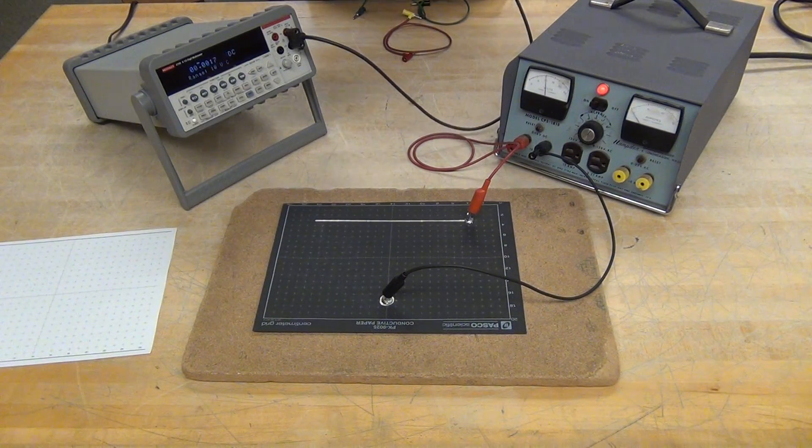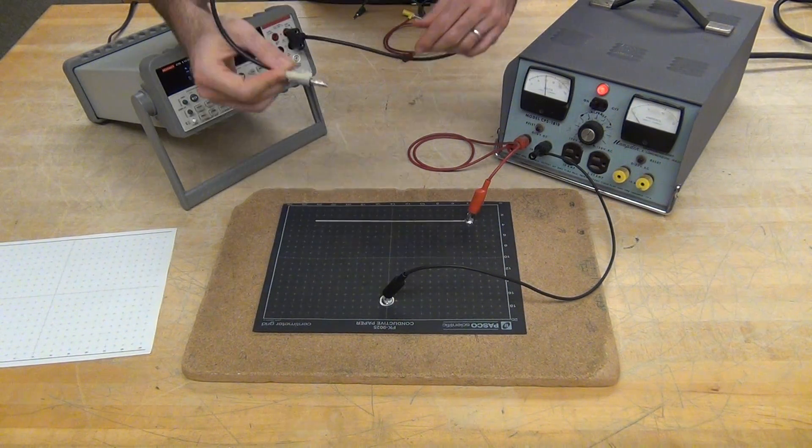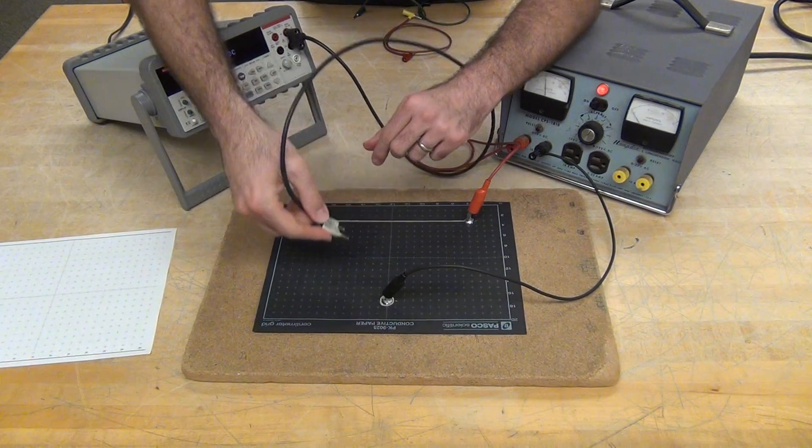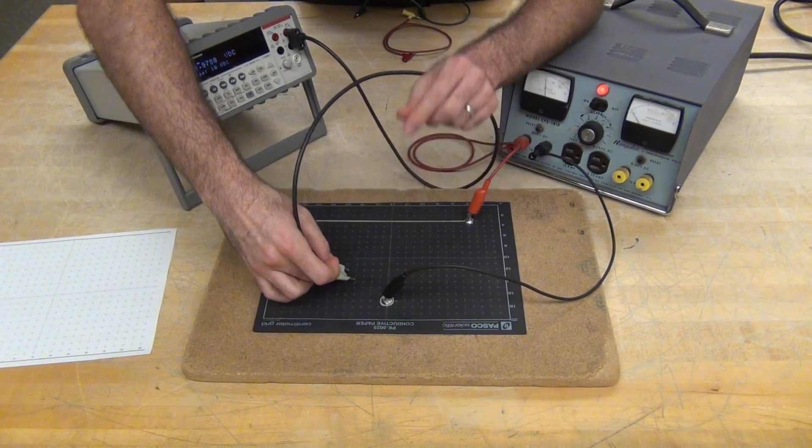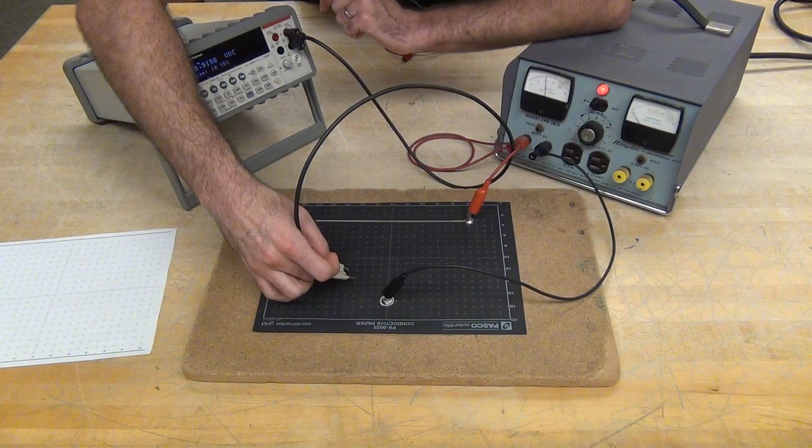And then that side, I want to keep track there. I'm now measuring a potential difference between those two points. So if I measured there, I'd get 0.9 volts.